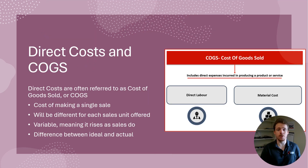Direct costs are often referred to as costs of goods sold, or COGS. COGS are the cost of making a single sale, meaning the materials that go into making a product, or labor that can be directly tied to its production. Think of the ingredients in a recipe — those are COGS for a restaurant.